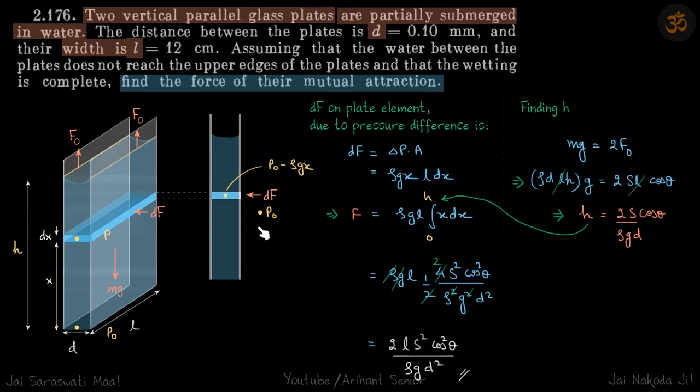Coming back to this problem, the small force df on this element of the wall is delta P into area. The area of this side of the element is L into dx.